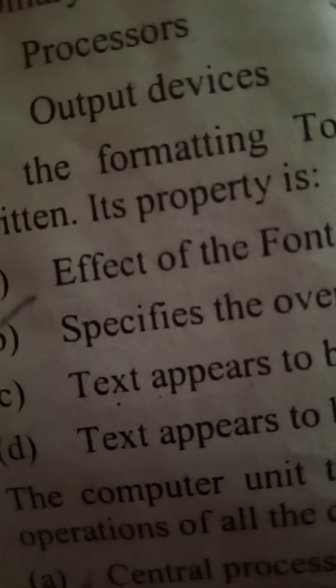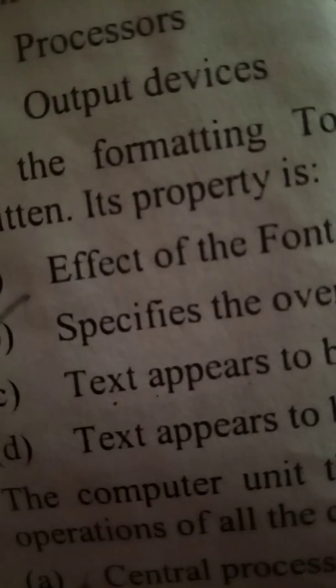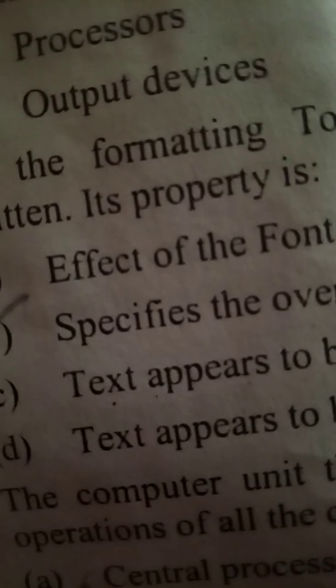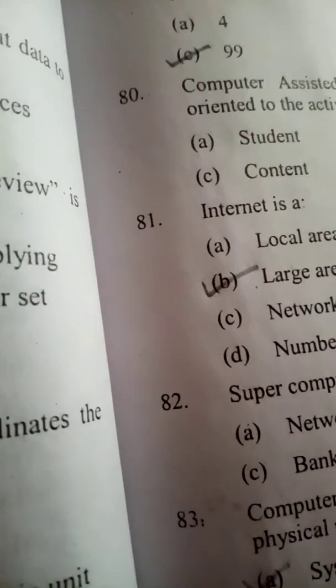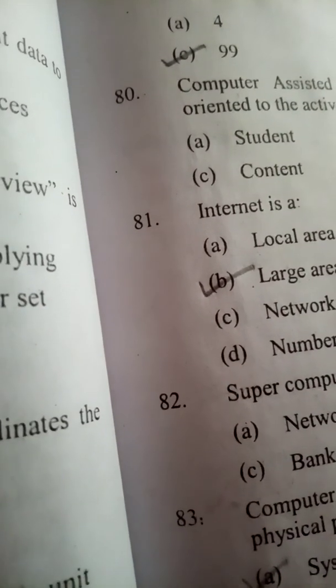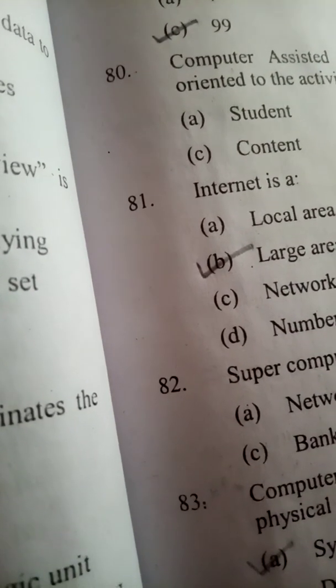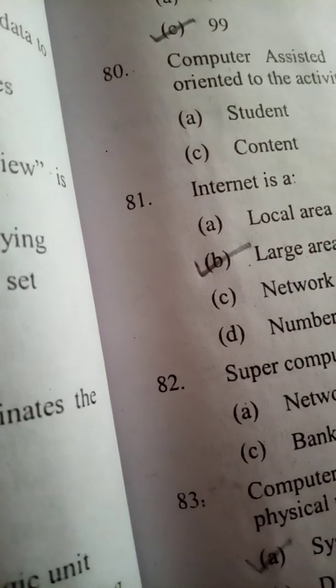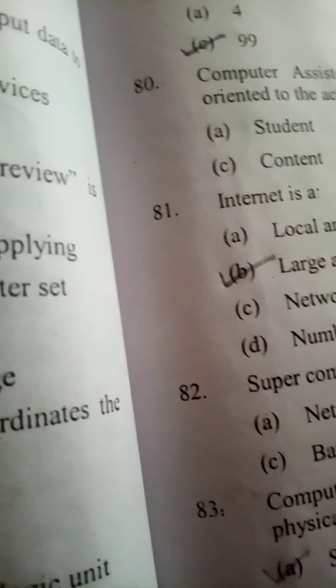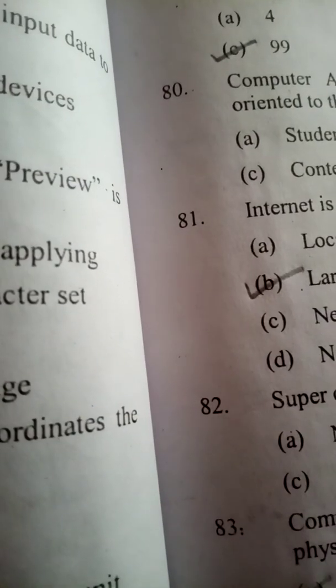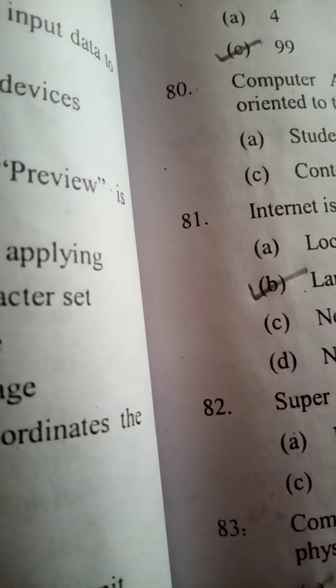F5 is used to refresh the page, and F1 is to display help. The basic memory unit of a computer includes bit, byte, kilobyte, and megabyte. The binary number 1001 has a decimal value equal to nine.